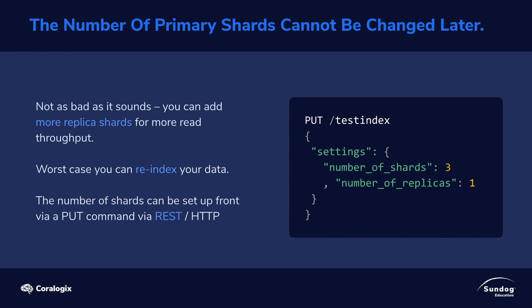That's the general idea of how Elasticsearch scales and how its architecture works. The important concepts here are primary and replica shards and how Elasticsearch will automatically distribute those shards across different nodes that live on different servers in your cluster, to provide resiliency against failure of any given node.